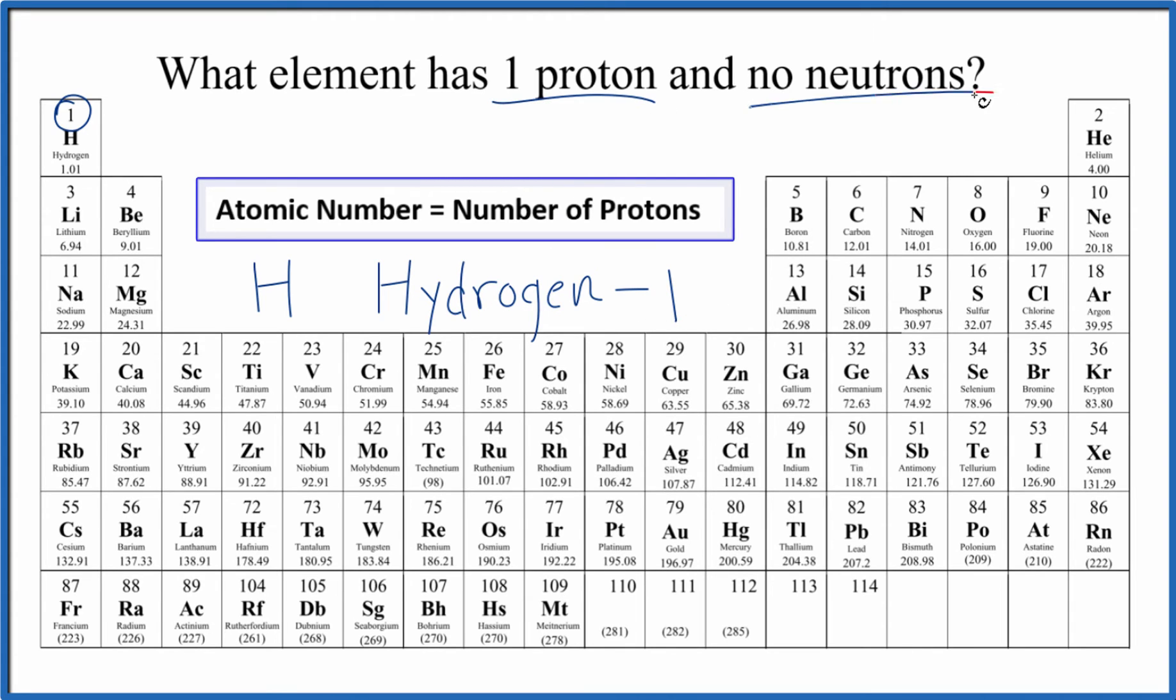Again, it doesn't matter how many neutrons we have. If you have one proton, it'll always be hydrogen. It's just that when we change the neutrons, we have different isotopes. This is Dr. B, thanks for watching.